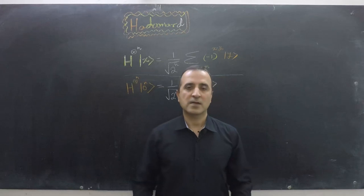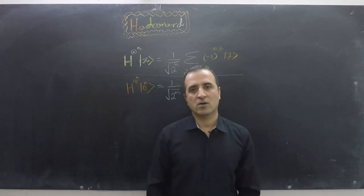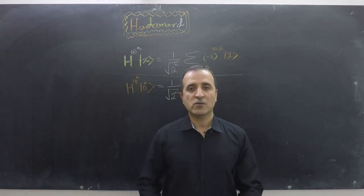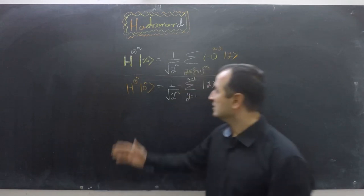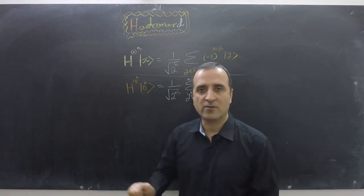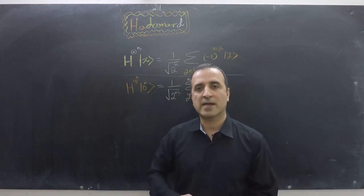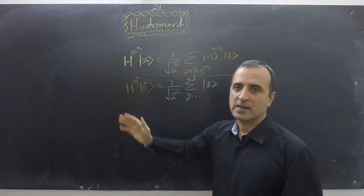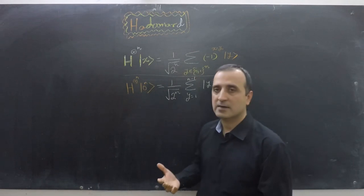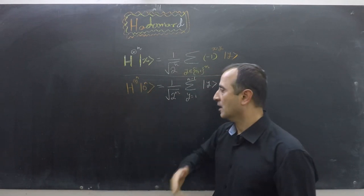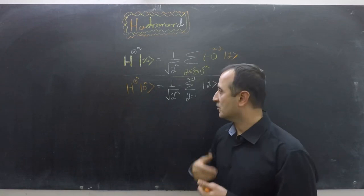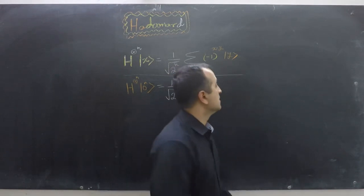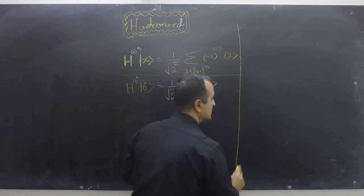In the last two videos we learned how to use the Hadamard gate on a single qubit and how to extend it to multiple qubits. In this video we will learn where such equations come from. When dealing with Hadamard gates and applying them on any n-qubit register, we just write those equations directly, but some students don't understand where they come from. So in this video I will try to derive these equations.